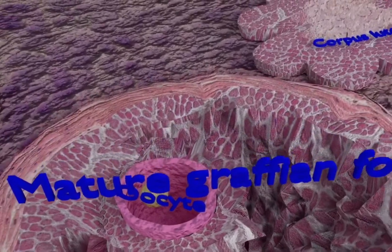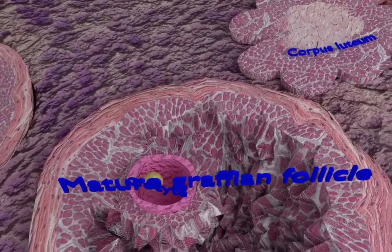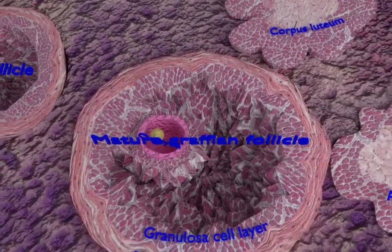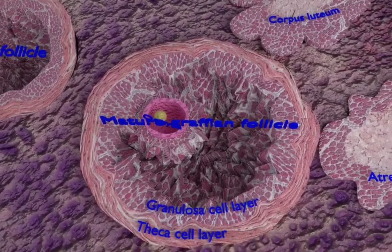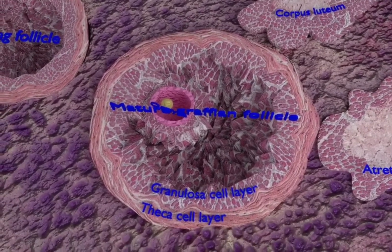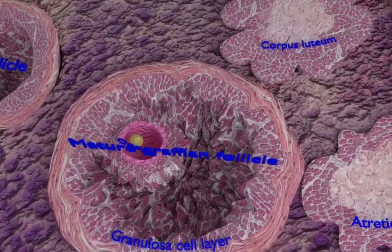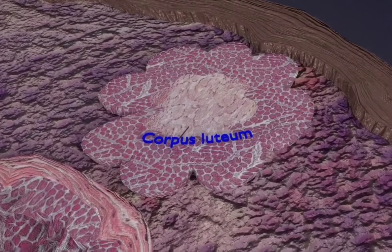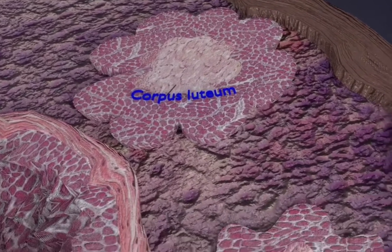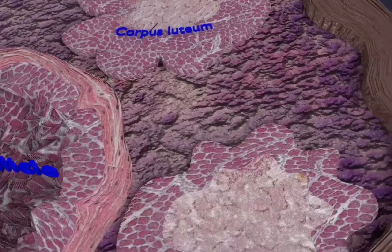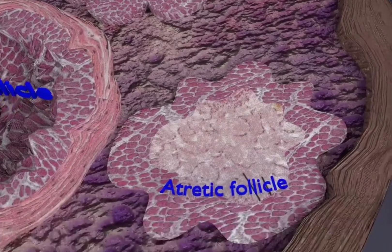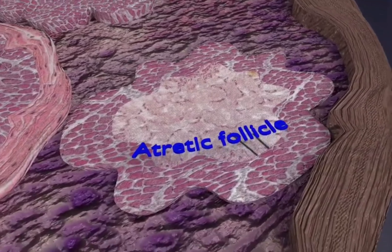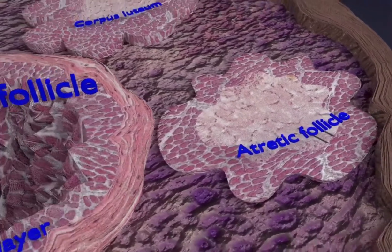Here you see the Graafian follicle rupture to release the oocyte. After ovulation and in response to luteinizing hormone, the remnant of the ruptured Graafian follicle enlarges and is transformed into a corpus luteum. The corpus luteum is a glandular structure that secretes progesterone and some estrogen.